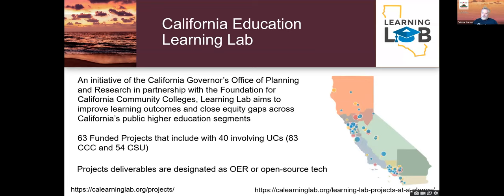Before talking about the LibreTexts project, I want to talk about funding for projects in the UC system. The California Education Learning Lab is a project out of the state governor's office in order to facilitate advancing STEM education involving technology. Representatives presented at yesterday's Cal OER conference—you can look at the video if you like to access that. It's not just for UC faculty, but also funding CSUs and the California Community College system. To date, they have 63 funded projects, 40 of which involve the UCs, 83 involve community colleges, and 54 use Cal State University systems. The key point is that the deliverables of all their projects are designated as openly licensed—whether they're OER or open source technology—and that provides a valuable infrastructure for facilitating OER construction.